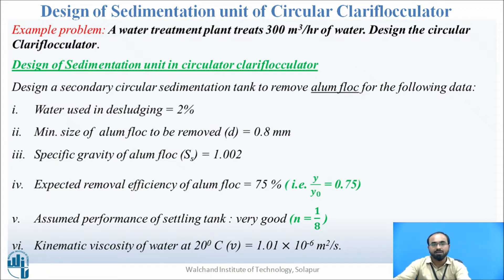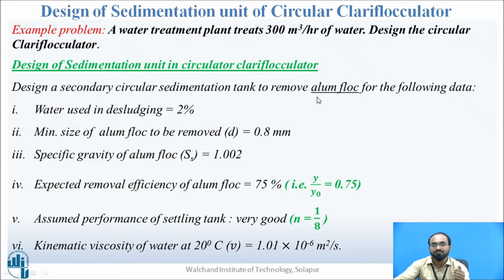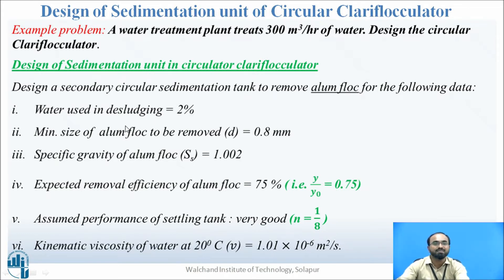We are now going towards the design of the sedimentation unit. We need some additional information from the problem statement. We are designing a secondary circular sedimentation tank to remove alum flocs — alum because it is the coagulant added before the flocculation unit. Water used for desludging will be 2 percent of discharge. The minimum size of alum flock to be removed is 0.8 mm (small d). Specific gravity of alum flock (SS) is 1.002.